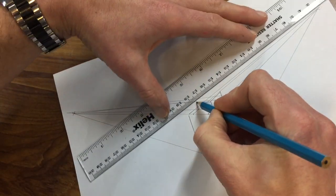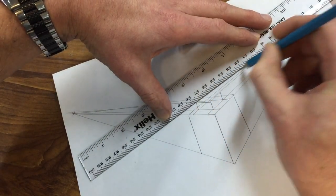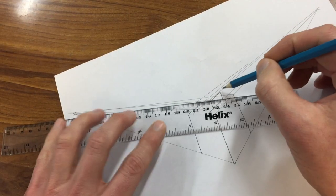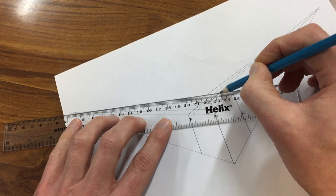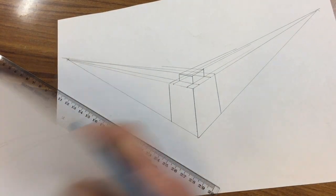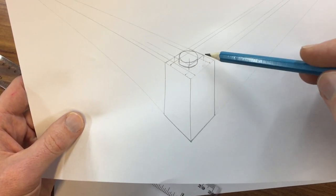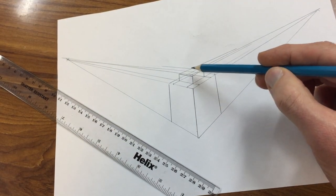And then from that point I'm going across to the vanishing point. So from here going towards the vanishing point and from here towards the vanishing point. Now you can sort of see it here: I've got my box underneath, I've got a box on top, and then within that box I've drawn a cylinder.